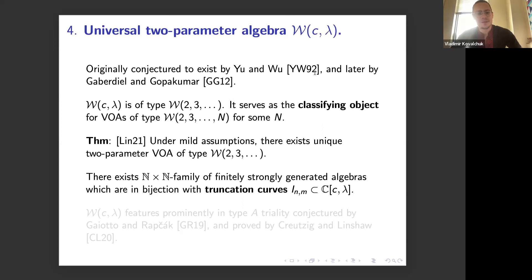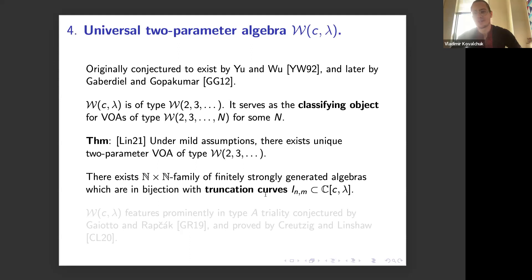There exists an n-by-n family of finitely strongly generated algebras in bijection with truncation curves — certain relationships between the two parameters, the central charge and lambda. If you have this special relationship, you can quotient this universal object to obtain a simple one-parameter algebra with strong generating type 2, 3, all the way to some n. These are very special curves; generically this doesn't happen. Think of it as analogous to admissible levels for affine algebras.